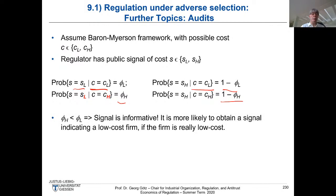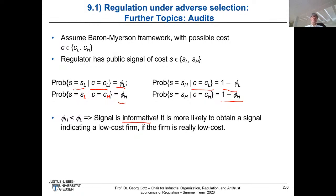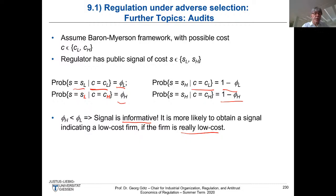The important assumption is that this signal is informative. If you're a low type, the probability that the auditor correctly reveals you as low type is φ_L, and this is higher than φ_H — the probability that the auditor mistakenly reveals a high type as low type. So φ_L > φ_H. This signal might still be very small — for instance φ_L might be only 20% — but it would be higher than φ_H, say 10%, for the high type. The signal is noisy but informative.